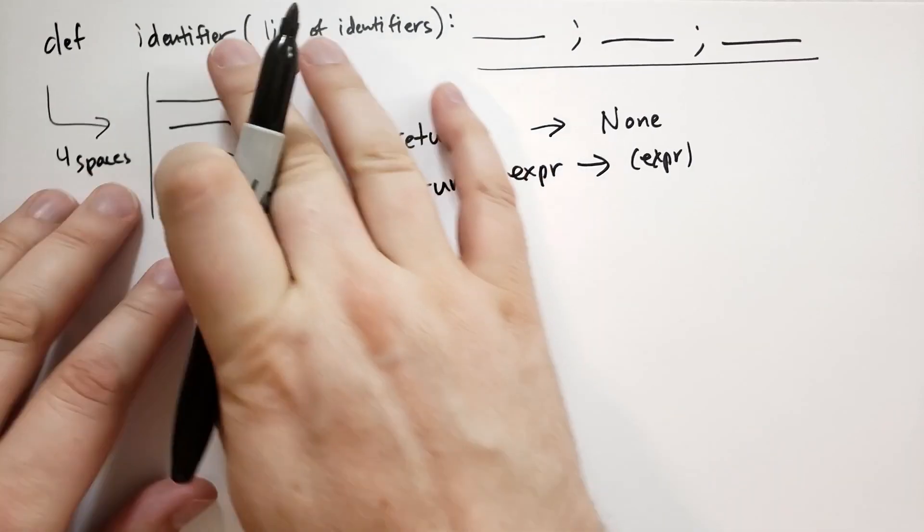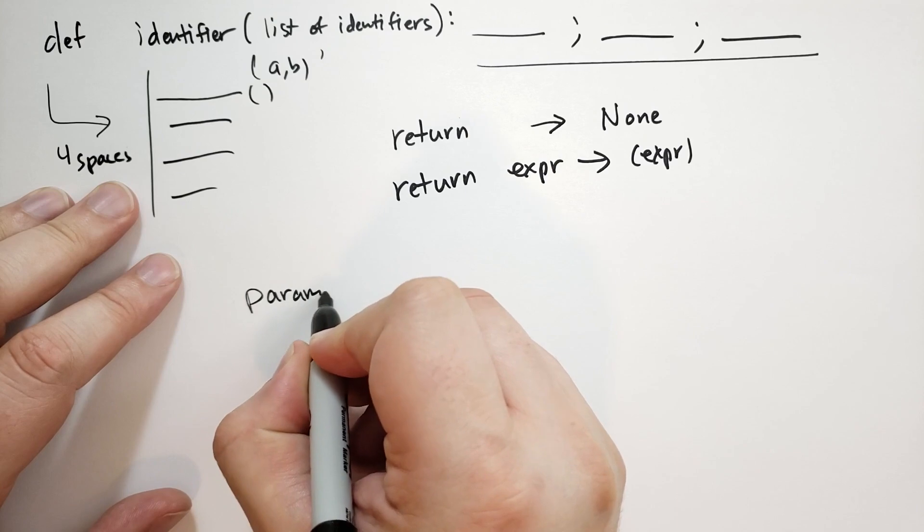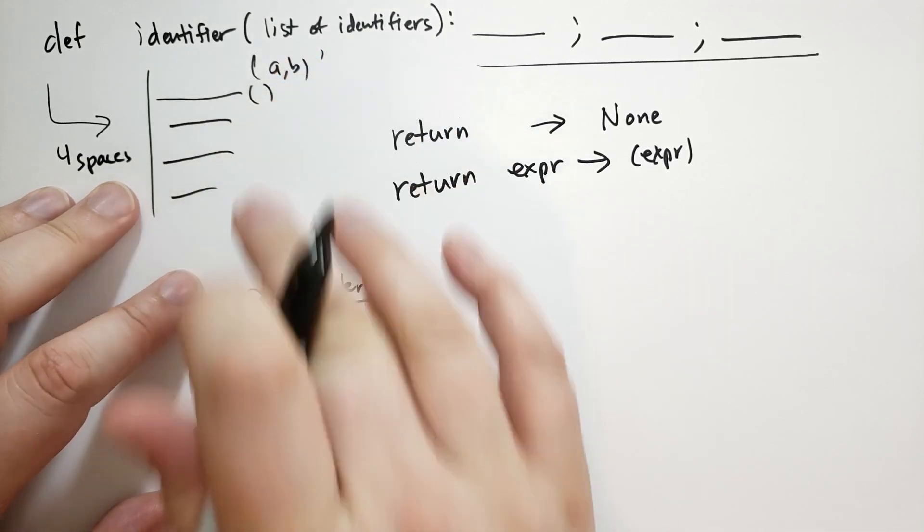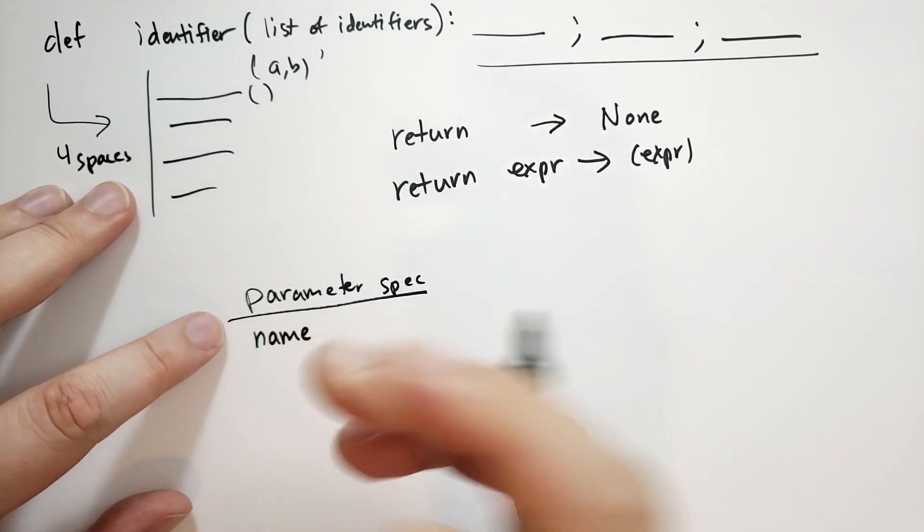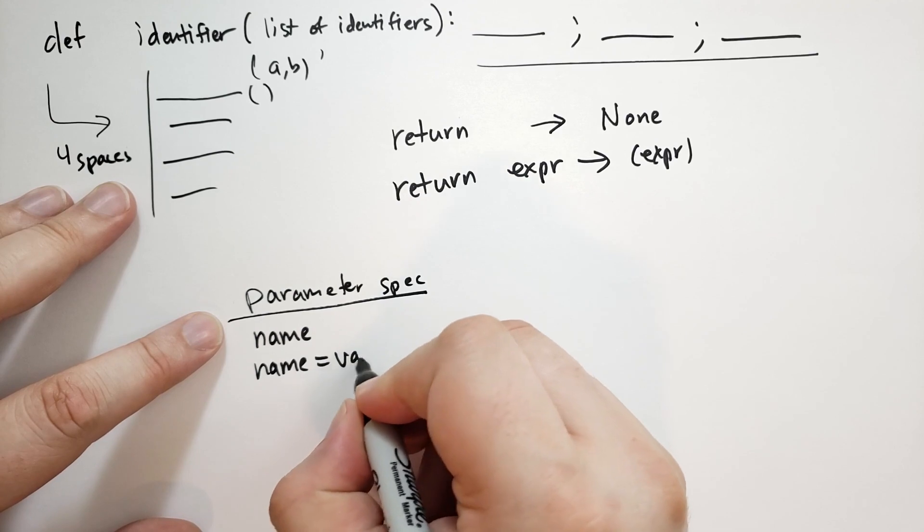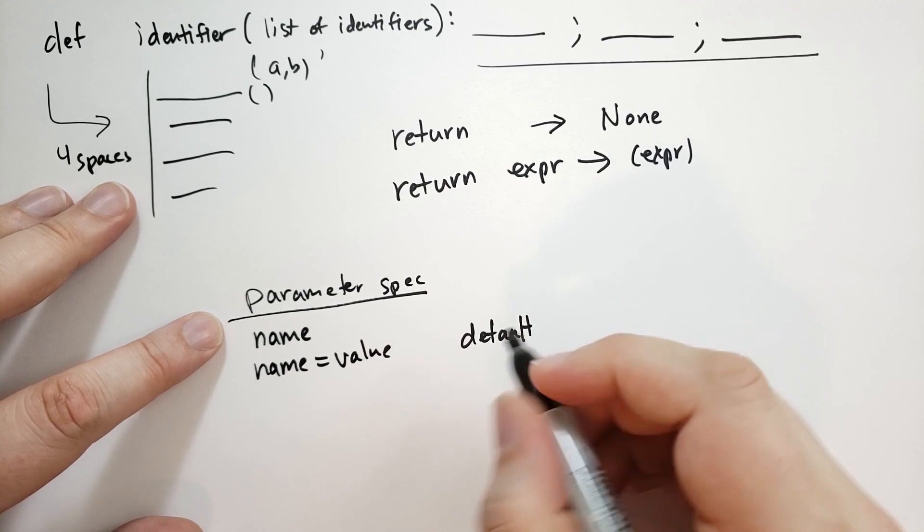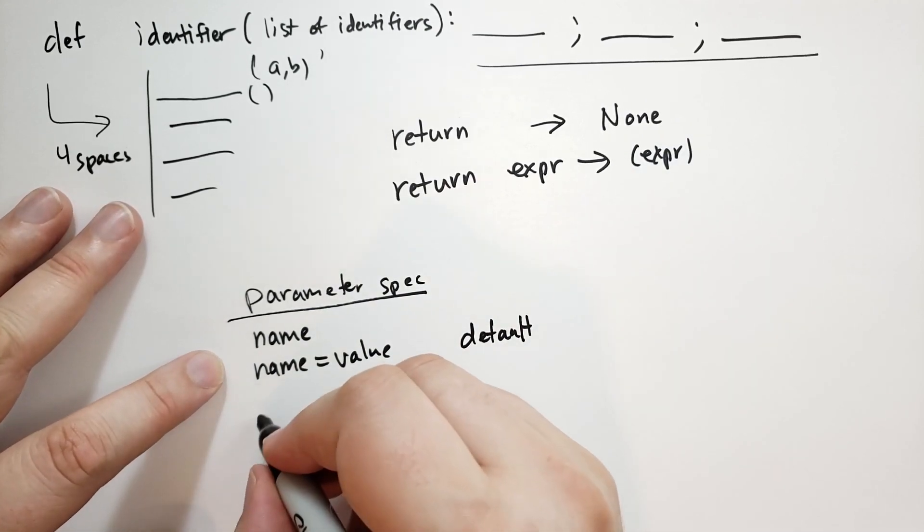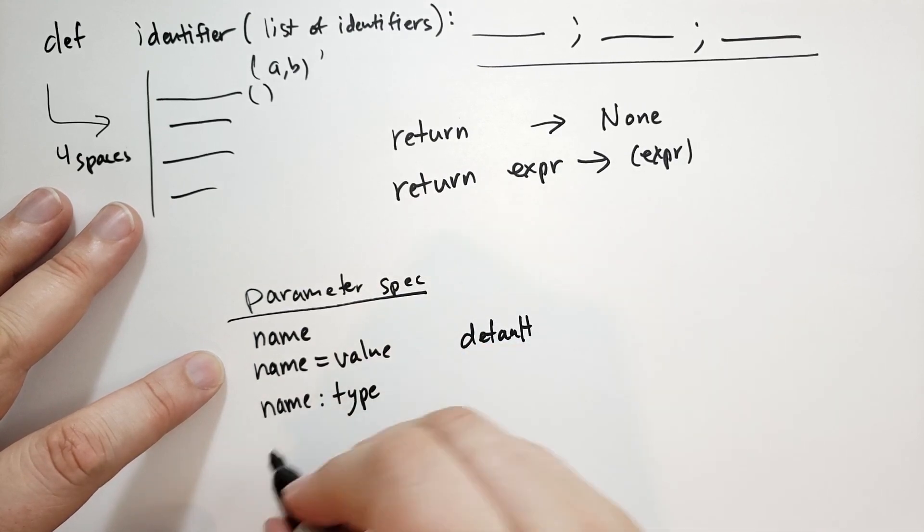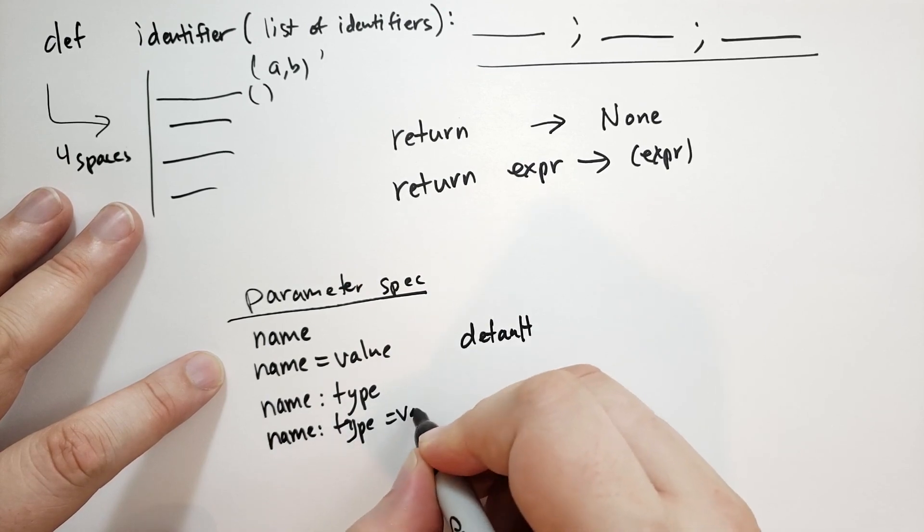Let's define some, oh wait, about this list of identifiers, the parameters. So the parameters, the parameter spec is actually quite a bit more complicated than I represented. It could just be a name, an identifier. You could have name equals some value. This is a default value that will get set if nothing else is specified. It could be a name, colon, the type that is expected, and you can combine those two together. Name, colon, type equals a value.